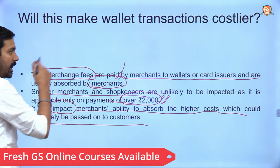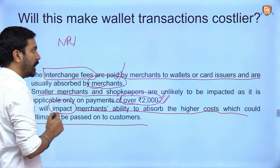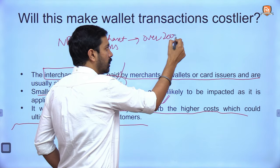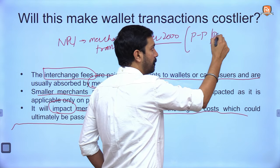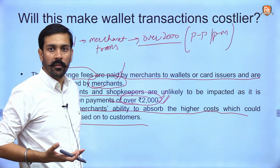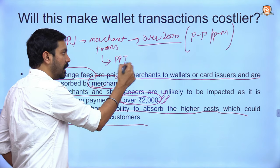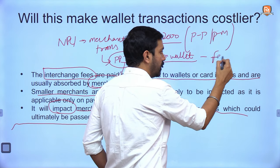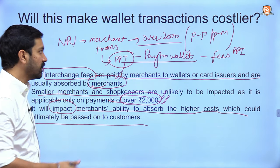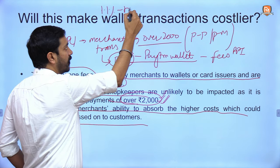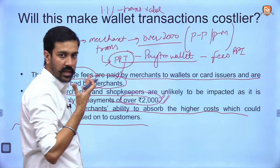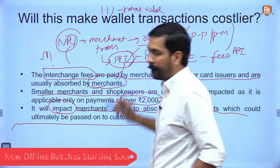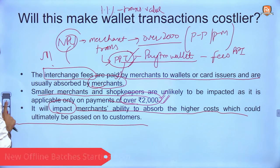In a nutshell: the notification has been issued by NPCI for merchant transactions that are over rupees 2000. It does not cover person-to-person or person-to-merchant transactions involving a wallet and a bank. The fee applies to merchant transactions over prepaid instruments like Paytm wallet. The fee is called PPI fees, charged at 1.1% of the transaction value. Key technical terms to know: what is NPCI, what is UPI, and what is PPI.